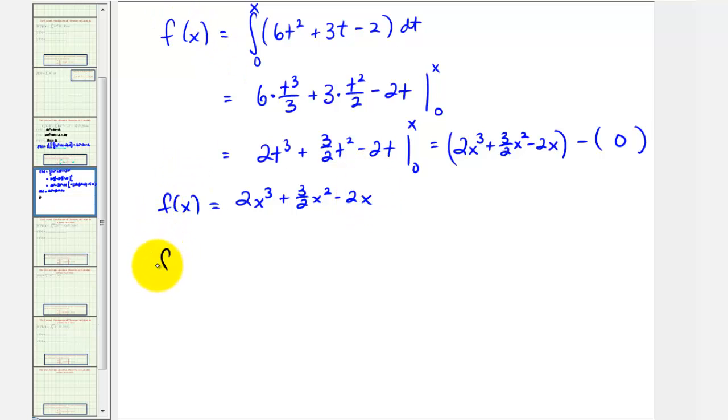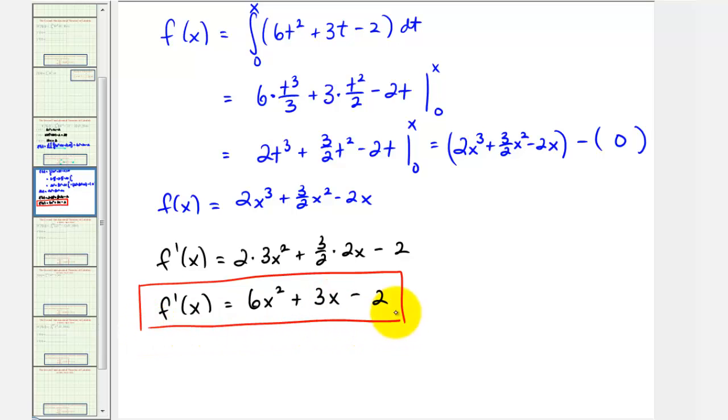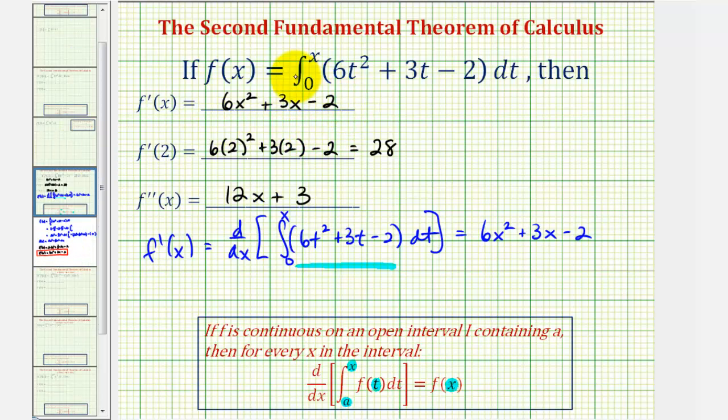And therefore we can now find f prime of x, which would be 2 times 3x to the second plus 3 halves times 2x minus 2. So notice f prime of x is equal to 6x to the second plus 3x minus 2, which is the same as what we found when applying the second fundamental theorem of calculus, as we see here.